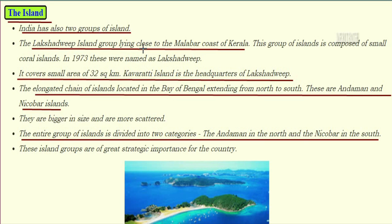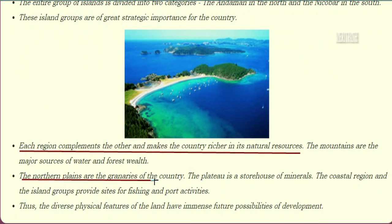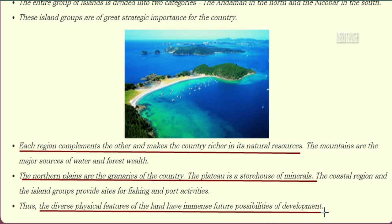India has two groups of islands. The Lakshadweep Island group lies close to the Malabar coast of Kerala and is composed of small coral islands. In 1973 they were named Lakshadweep, covering a small area of 32 square kilometers. Kavaratti Island is the headquarters of Lakshadweep. The elongated chain of islands in the Bay of Bengal, extending from north to south, is known as the Andaman and Nicobar Islands — bigger in size and more scattered. The entire group is divided into Andaman in the north and Nicobar in the south, and these islands are of great strategic importance for the country.